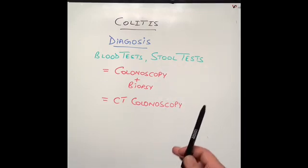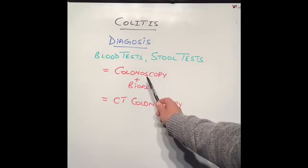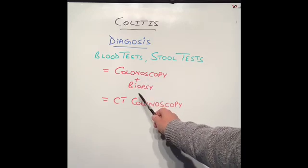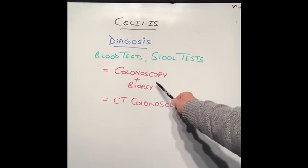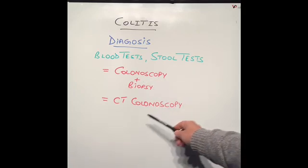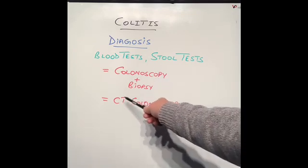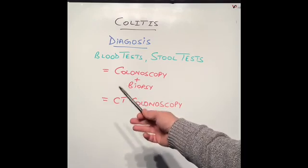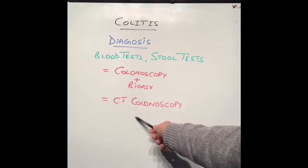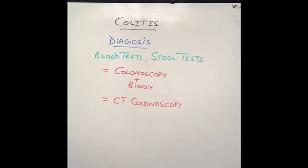The two main tests used to diagnose ulcerative colitis are colonoscopy — a camera inserted from the bottom end — and biopsies taken at the same time and examined under a microscope, which will confirm whether this is ulcerative colitis. The second test is CT colonoscopy, which is similar but done with a CT scanner; biopsies cannot be taken, however ulcers and other findings of colitis can still be seen.